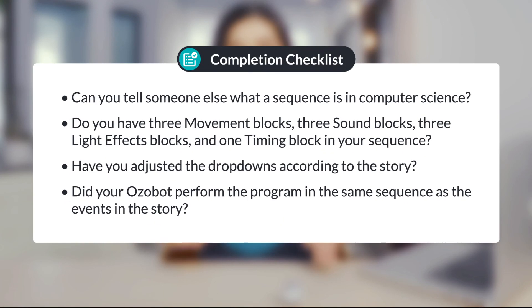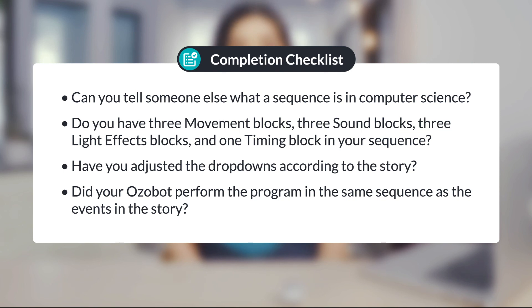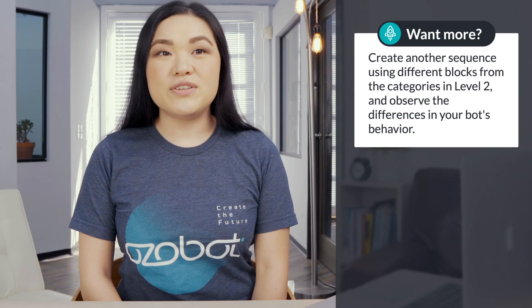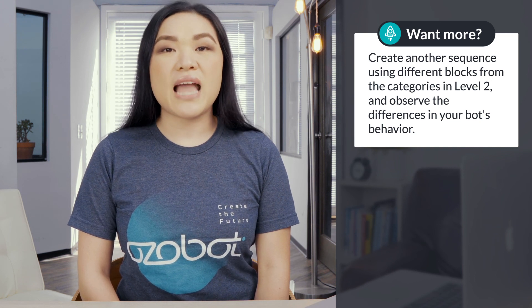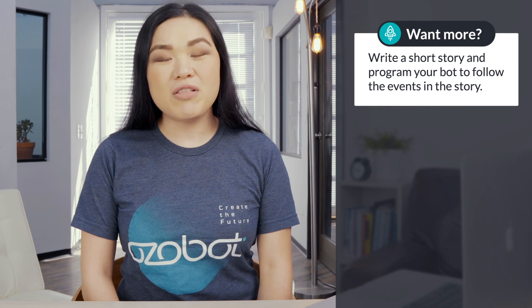Well done. Let's make sure you've completed the lesson. Can you tell somebody what a sequence is in computer science? Do you have three movement blocks, three sound blocks, three light effect blocks, and one timing block in your sequence? Have you adjusted the drop downs according to your story? Did your Ozobot perform the program in the same sequence as the events in your story? If you're looking for more to do, you can create another sequence using different blocks from the categories in level two and observe the differences in your bot's behavior. Or you can write a short story and program your bot to follow the events in your story. Come back again soon for our next lesson.